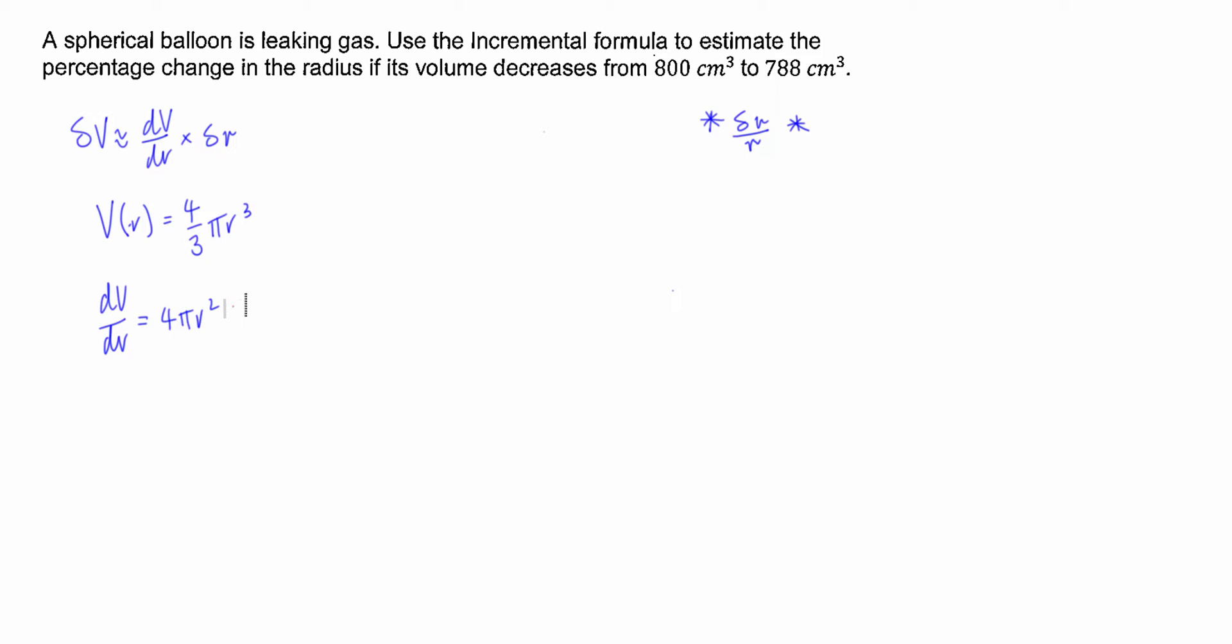So what I would then do is I would insert this back into here and we are left with delta v is equal to four pi r squared times delta r. Now what we're actually looking for is we're looking for percentage change. So I'm going to get the percentage change in the volume because that's the method that I prefer to do. So we then go this is going to be all over volume. I'm dividing both sides of the equality by the volume.